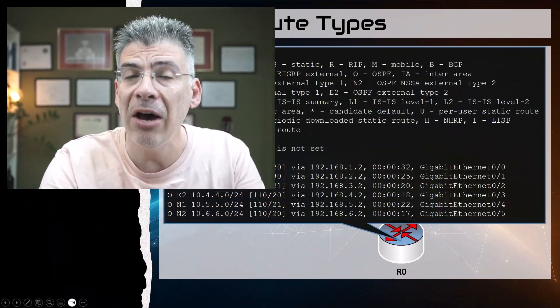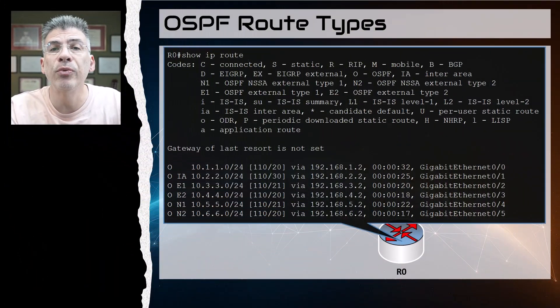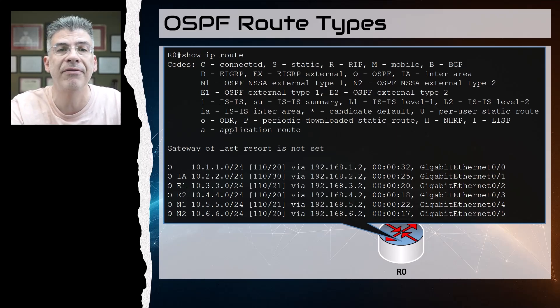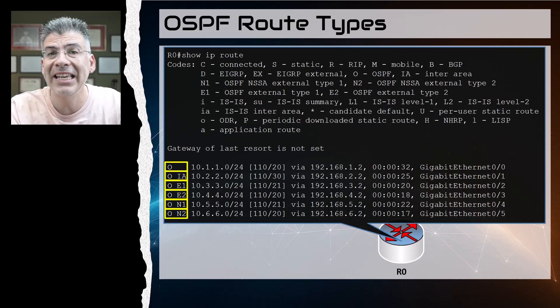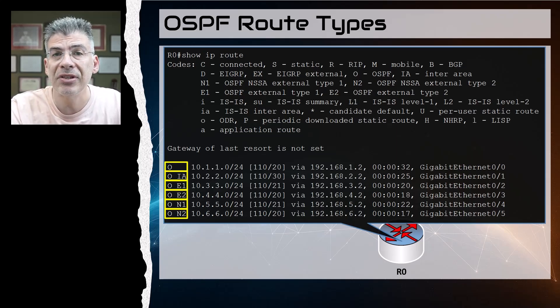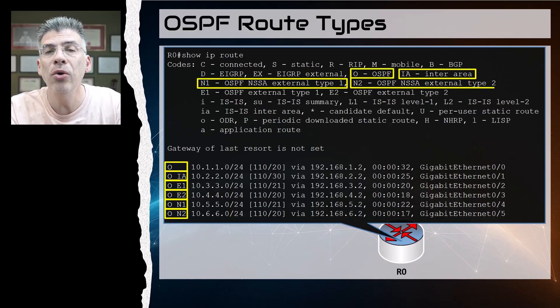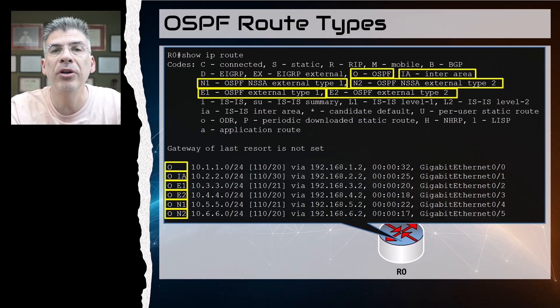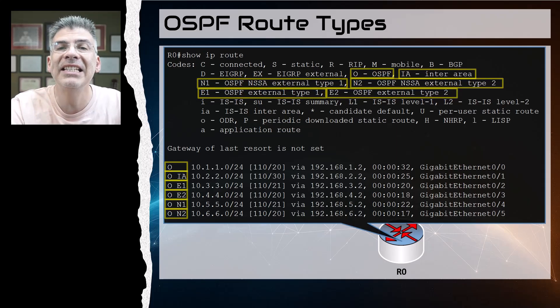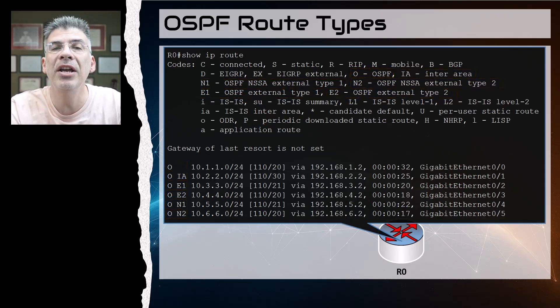In this video we'll examine these OSPF route types to gain a deeper understanding of what they mean, as well as how they are used and how they behave. This is the routing table of a Cisco router which contains several routes learned via OSPF. You'll notice that some of these routes have various indicators or codes that give us more information about how they are learned. There are six route types, and we can see their descriptions in the codes section of the output of the show IP route command. Let's take a deeper look at these to understand them further.